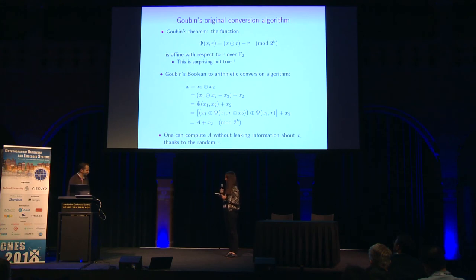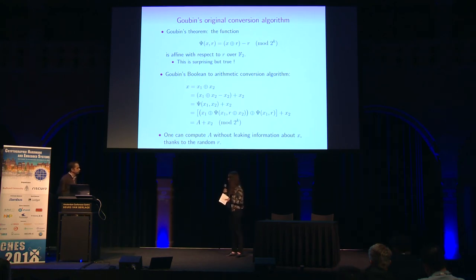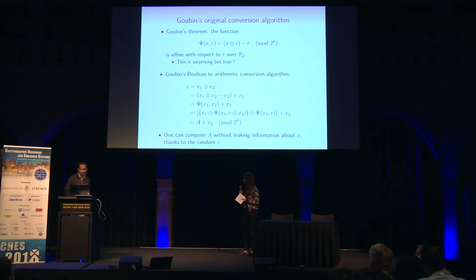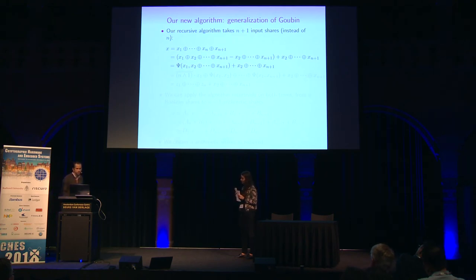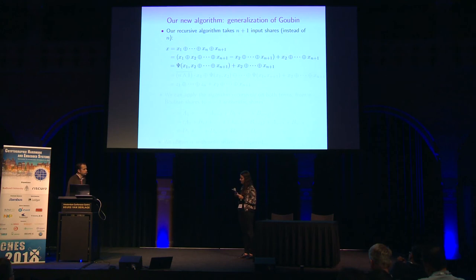Question: You tested your method on small orders with the verification tool. For these smaller orders, can you use fewer random values? Answer: Yes, we could use less randomness — we didn't really try to optimize the amount of randomness, but since the complexity is exponential, it is certainly possible to reduce it, and you could verify this with the formal tool.